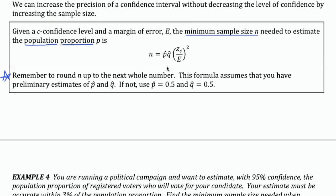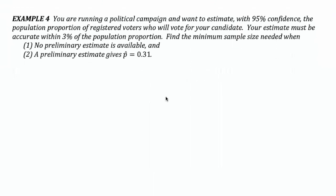So take a look at Example 4. It says you're running a political campaign and you want to estimate with 95% confidence the population proportion of registered voters who will vote for your candidate. Your estimate must be accurate within 3% of the actual population proportion, so we don't want a margin of error more than 3%. So it says find the minimum sample size needed when, and we've got both situations here. When we really have no idea, so no preliminary estimate is available, which really means I don't have any previous polling data. I have no idea what proportion of the population of registered voters will vote for this candidate.